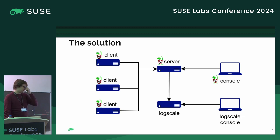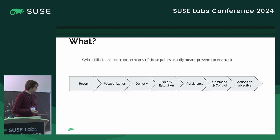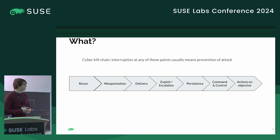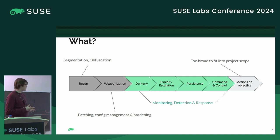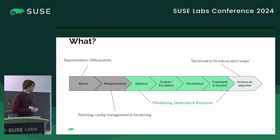Before going over the data being collected and the detections, it's good to have some structure. I chose the cyber kill chain model, which describes the steps an attacker must take to succeed. The model has its own problems but it's good enough for a presentation. In the context of this project, the reconnaissance phase — the attacker figuring out what is running where — is not really what we are trying to address. Making an exploit to breach the environment is also out of scope. We're really trying to focus on those four middle stages.